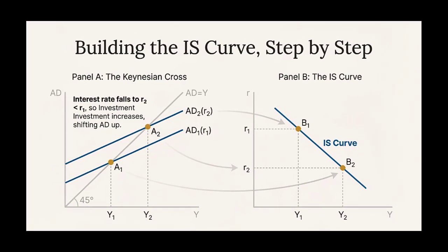We begin by defining equilibrium. In the goods market, that means the total amount produced — output — has to equal the total amount demanded: aggregate expenditure. That expenditure comes from three main places: consumption from households, investment from firms, and government spending. This is the real side of the economy — buying things, building things. And the critical variable that connects this to the financial world is investment.